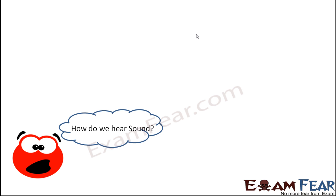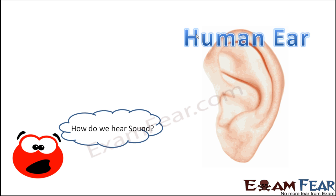Now the question is: how do we hear sound? Sound is produced by some object, but how are we able to hear it — with the help of our ears? That's the simplest answer. But how is our ear so equipped that it can interpret sound waves? For that, we need to gain some understanding of the human ear.